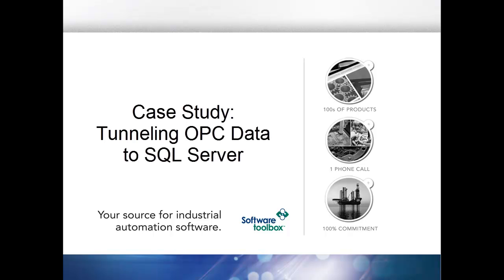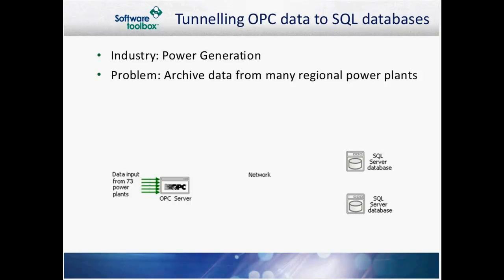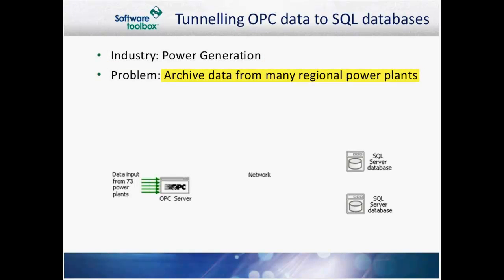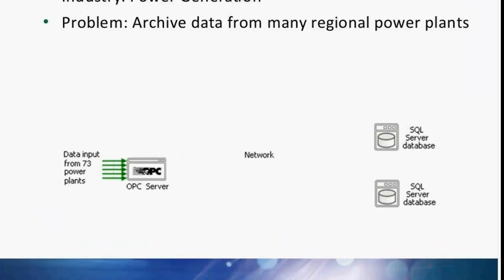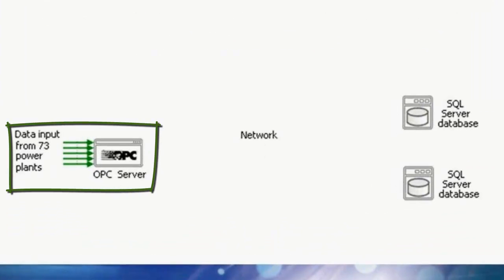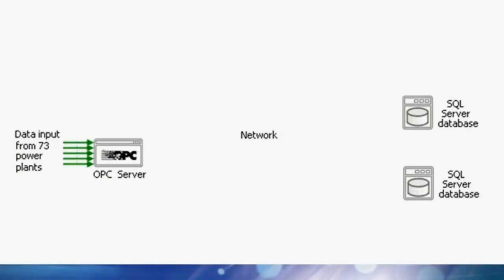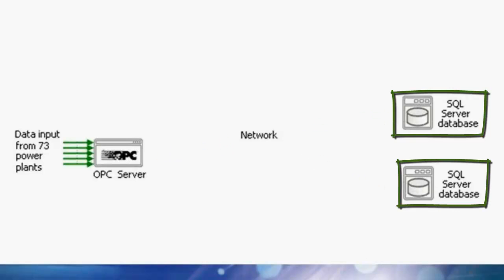Case Study: Tunneling OPC Data to a SQL Server. This customer is a US-based power generation company. They needed to improve their method of collecting and archiving data coming from a number of regional power plants. In this case they had 73 power plants, and their goal was to move that data from the OPC server over to the SQL database servers.